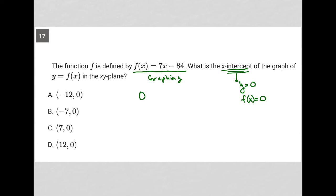All I have to do mathematically is replace f(x) with 0, so I'd have 0 = 7x - 84. I'd add 84 to both sides to get 84 = 7x, then divide both sides by 7 to get 12 = x.